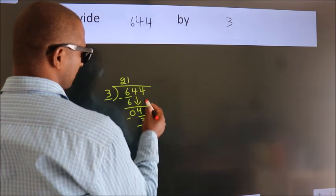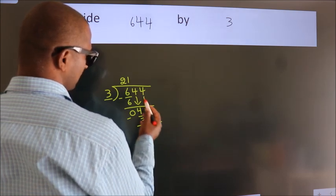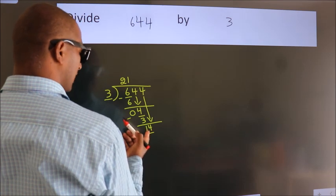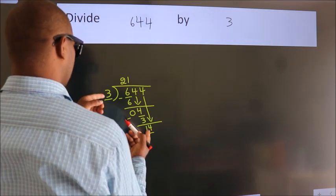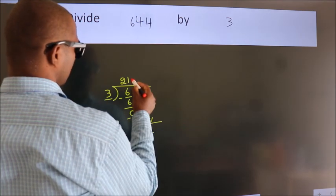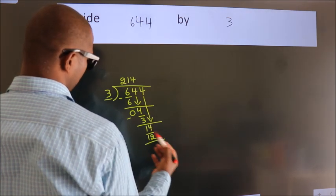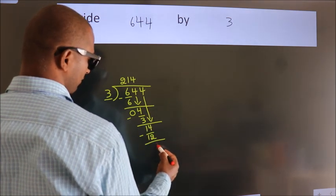After this, bring down the beside number, so 4 down, so 14. A number close to 14. In 3 table is 3 4s, 12. Now, we subtract, we get 2.